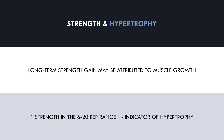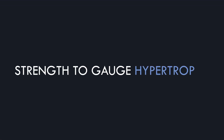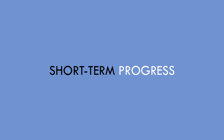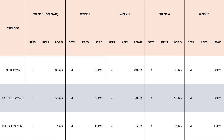Now that we understand that strength gains in the 6 to 20 rep range can be a good indicator of muscle growth, let's explore how we can practically use this data for our hypertrophy training. The first way is to look at week to week performance — we are looking for increases in reps performed over the course of a mesocycle with other variables remaining the same. For example, a trainee performs a back and bicep training session each week involving the bent over row, lat pulldown, and dumbbell bicep curl, performing four sets of each exercise and taking each set one to two reps before failure.